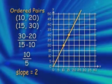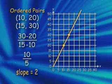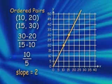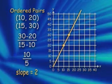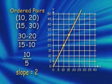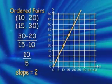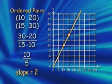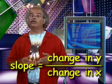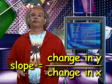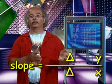Remember, we said the rate of change in this situation was 2, and now we see that the slope is 2. The slope represents the rate of change. So the slope is the change in y over the change in x, sometimes expressed with this notation.